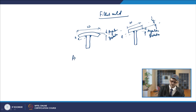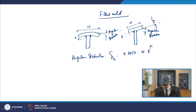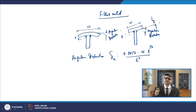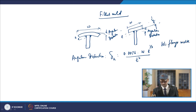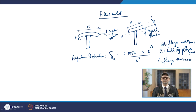Angular distortion in fillet welds is measured using the formula: δ_A = 0.0076 × W × L^(1.3) / T², where W is the flange width in mm, L is the weld leg length in mm, and T is the flange thickness in mm. This is how you calculate the value of angular distortion.